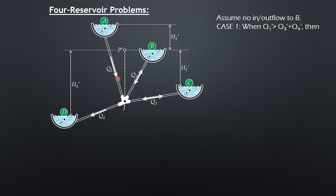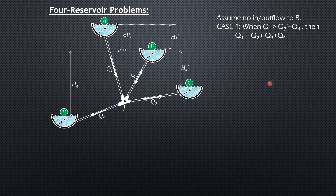For Case 1 of the four-reservoir problem, we compare q1' with q3' and q4'. The flow direction in pipe 3 is towards reservoir C because the piezometric level at P' is above C. When q1' is greater than q3' plus q4', meaning only reservoir A will supply water to all others, the piezometric level will be above B. That is Case 1 — location P1 — and the equation is q1 = q2 + q3 + q4.